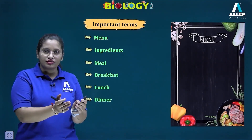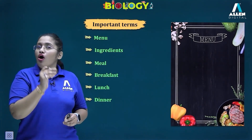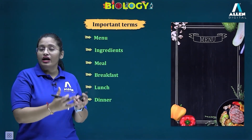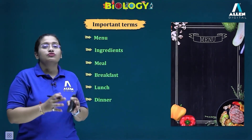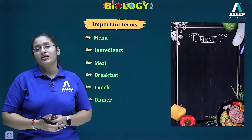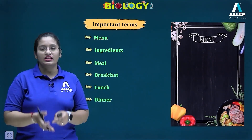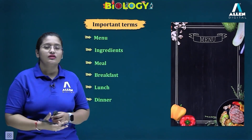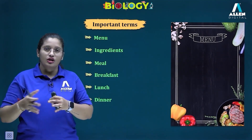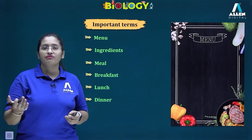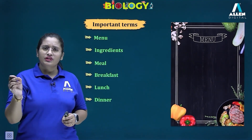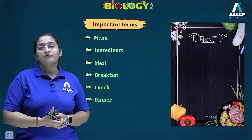The second term is 'ingredients'. For preparation of any dish, we require some raw substances. All those raw materials needed to prepare a particular dish are called the ingredients of that dish. The third term is 'meal' — meal is the food that you consume at different times of the day. Whatever food you consume at different intervals in a day, those are all your meals.